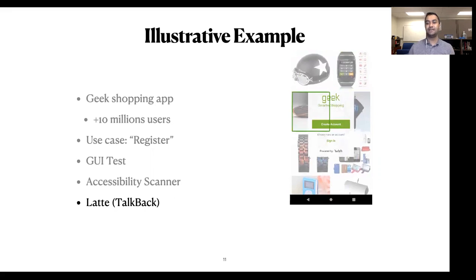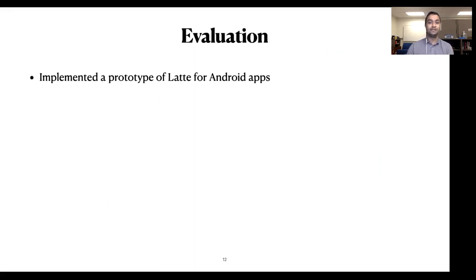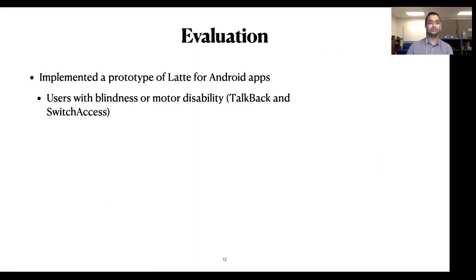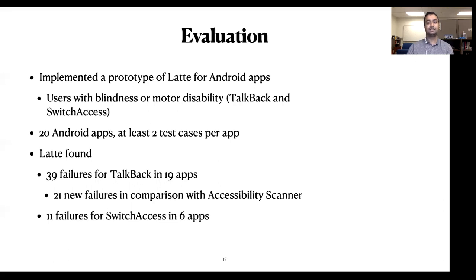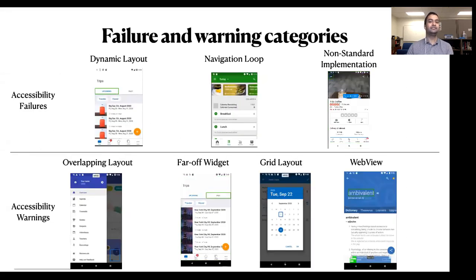Now let's see the effectiveness of Lotte for real-world apps in our empirical evaluation. We implemented a prototype for TalkBack and Switch Access in Android and used 20 Android apps. For TalkBack, Lotte found 39 failures, where 21 of them could not be detected by Accessibility Scanner. For Switch Access, Lotte found 11 failures, where none of them could be detected by Accessibility Scanner. We manually examined the failures and warnings detected by Lotte and categorized them, so developers can be aware of them.